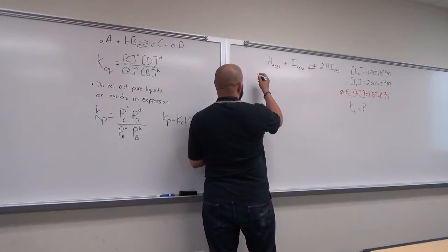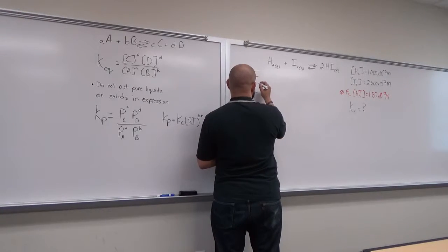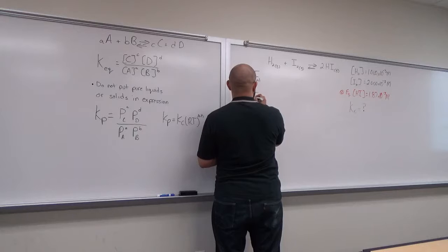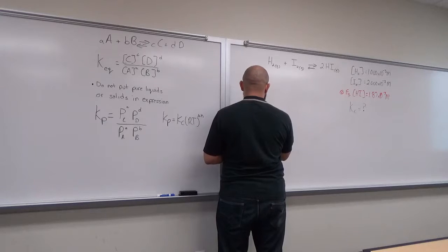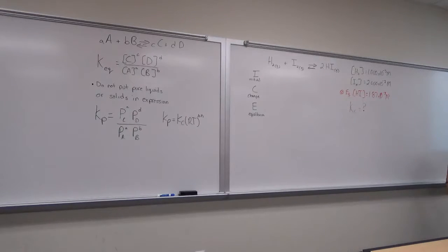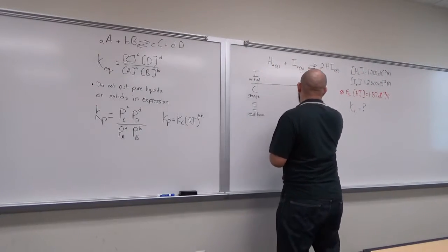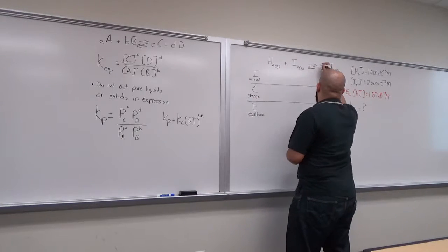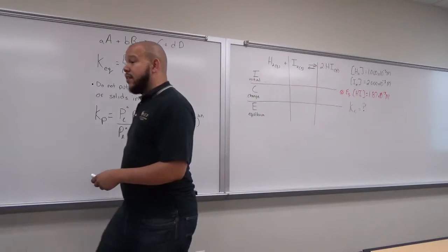ICE stands for Initial, Change, and Equilibrium. You won't see me write these words out again — just I-C-E. The ICE table is a structure for putting in information we know and using it to determine information we don't know.